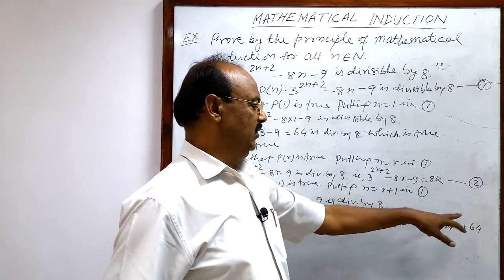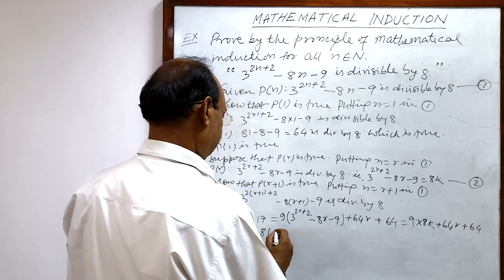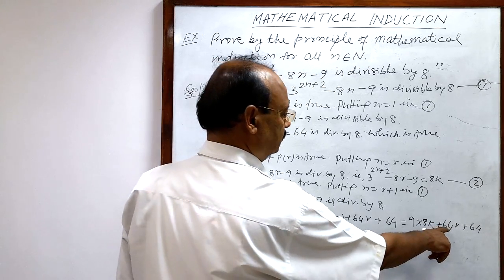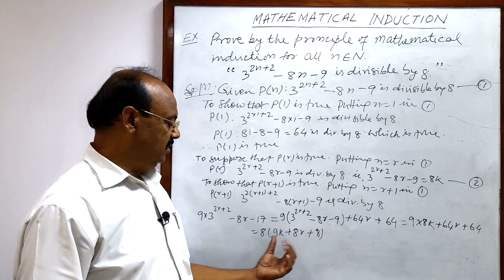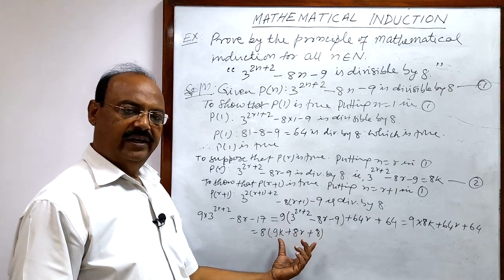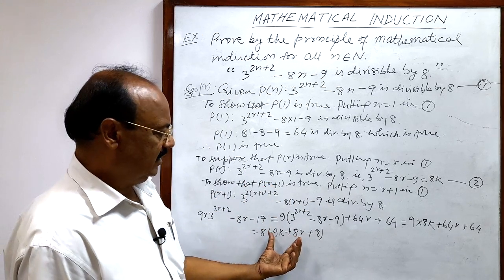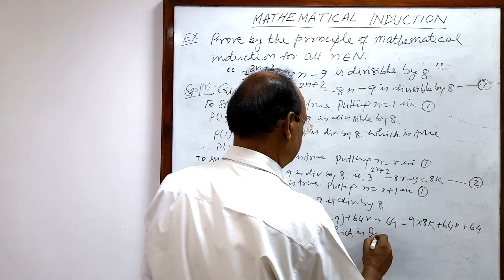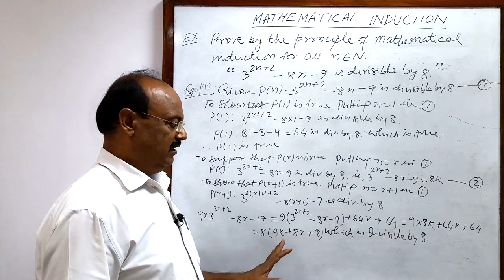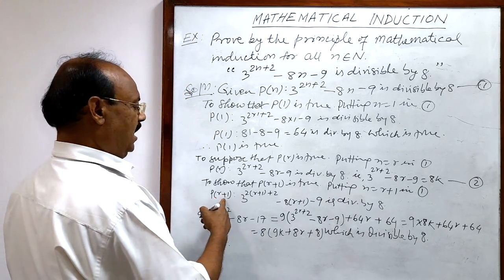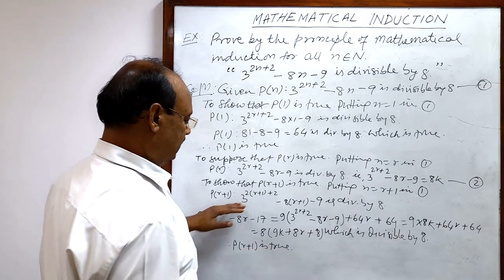We can take 8 common from these terms, giving 8 times (9K plus 8R plus 8). Since 8 appears as a factor, this expression is divisible by 8. We had to show P(R+1) is divisible by 8, and we have shown 8 is a factor. Therefore P(R+1) is true. This is the third and final step.